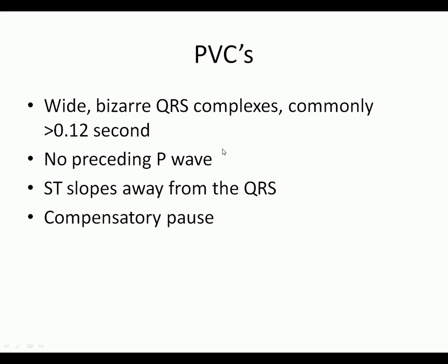Now let's get into PVCs — premature ventricular contractions. These are the ones that can be pathologic; PACs aren't necessarily as dangerous as PVCs can be. PVCs have a wide, bizarre QRS complex, usually greater than 0.12 seconds. There's no P wave because there is no stimulus signaling them — it's a spontaneous depolarization. The ST segment often slopes away from the QRS, and you can sometimes have a compensatory pause.